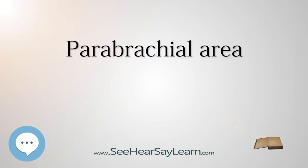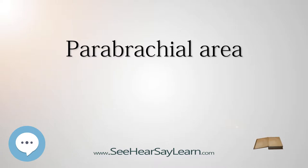The parabrachial nucleus, also known as the parabrachial complex, is an area in the dorsolateral pons that surrounds the superior cerebellar peduncle as it enters the brainstem from the cerebellum. It gets its name from the Latin term for the superior cerebellar peduncle, the brachium conjunctivum. In the human brain, the massive expansion of the superior cerebellar peduncle expands the parabrachial nucleus, which forms a thin strip of gray matter over most of the peduncle.